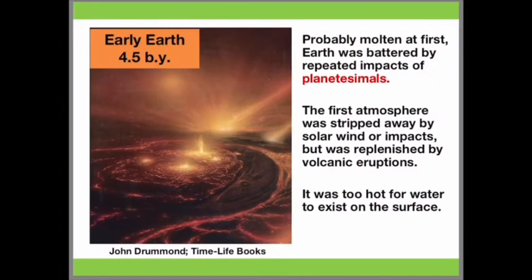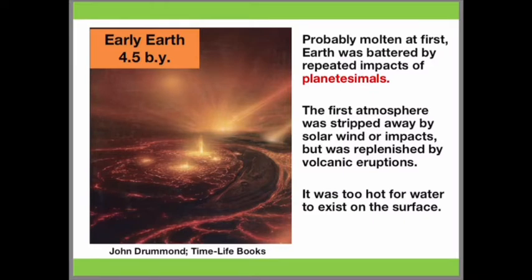Around 4.5 billion years ago, during its early history, Earth was bombarded by massive meteorites and other celestial bodies. Temperature was very high with frequent volcanic activity. Given such inhospitable conditions, it probably prevented life from evolving. At this particular time, the atmosphere contained water vapor and many chemicals such as hydrogen, methane, and ammonia, released by volcanic eruptions.